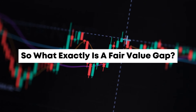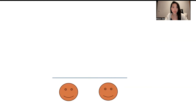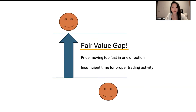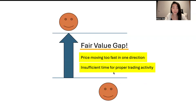So what exactly is a fair value gap? Let me put it in layman's terms. Just imagine there are two people walking from a starting line at the same steady speed, and one of them decides to sprint ahead, leaving a gap between the both of them. This gap, from a trading or investing point of view, is known as the fair value gap — where the price is moving too fast in one direction, there is too much bias in the market, or too many sellers, leaving insufficient time for proper trading activity to take place. Hence, it results in a fair value gap.